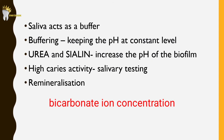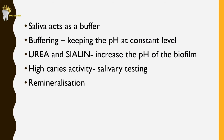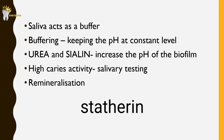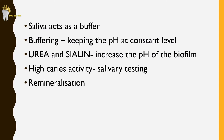Saliva also has molecules that contribute to increasing the pH of the biofilm — these are urea and sialin. Hydrolysis of these molecules results in the production of ammonia, which causes the pH to increase. Because of these effects, if a person has high caries activity, salivary testing should be recommended. Saliva also aids remineralization: it is supersaturated with calcium and phosphate ions and contains statherin, a proline-rich peptide that stabilizes calcium and phosphate ions and prevents their excessive deposition on the teeth, keeping them readily available for remineralization of enamel.